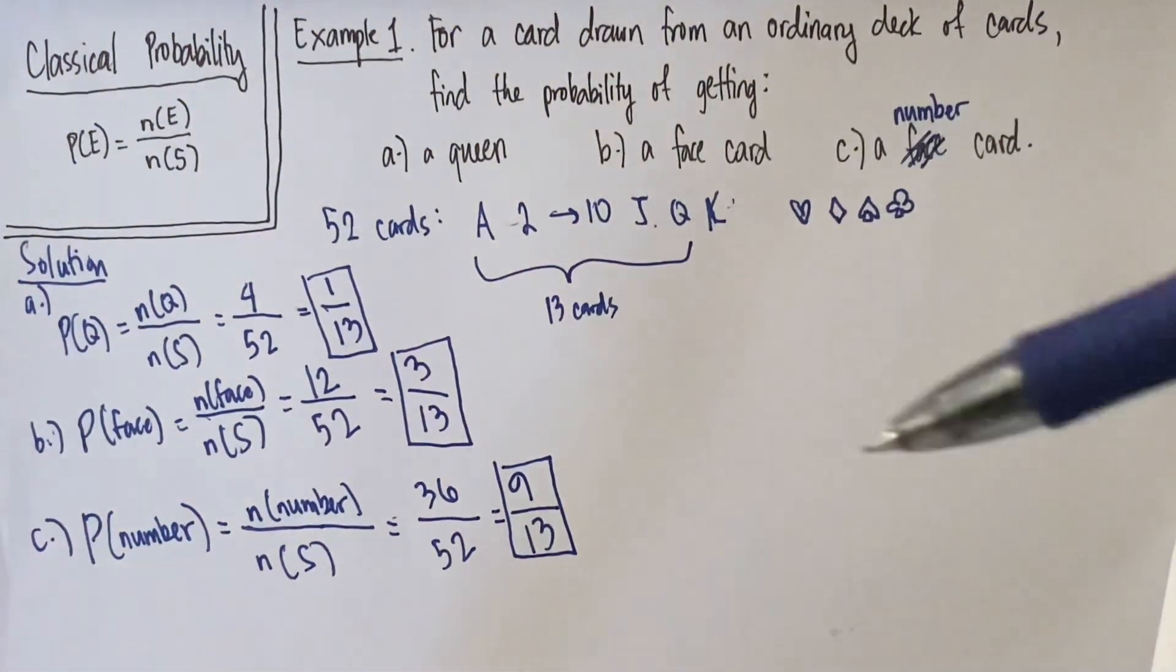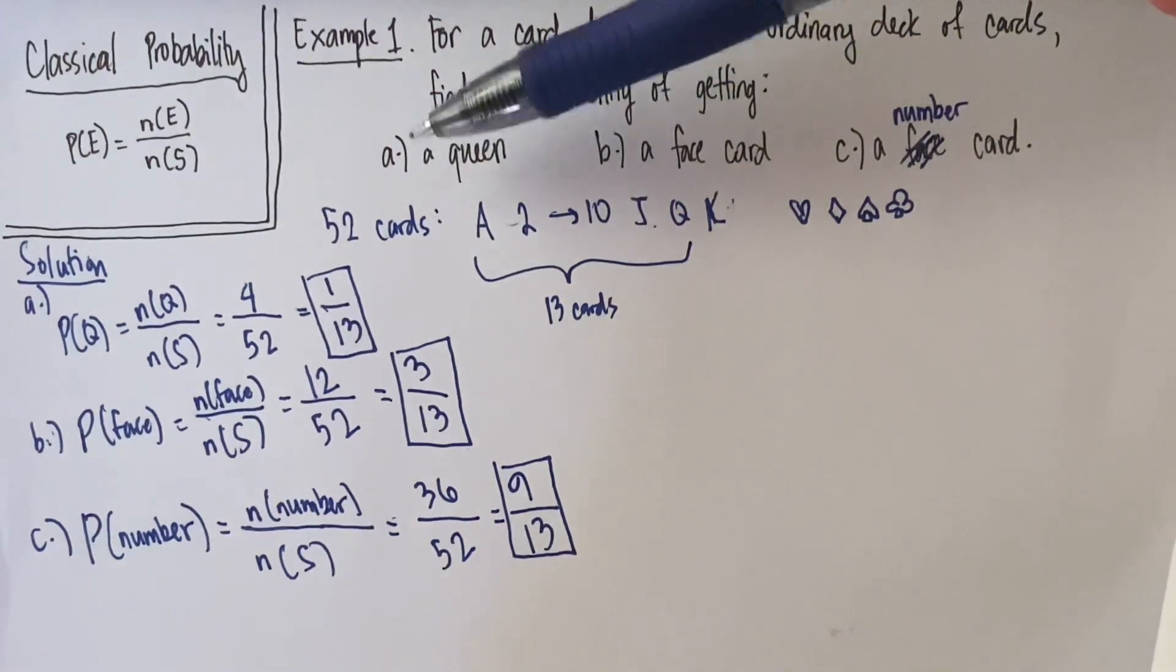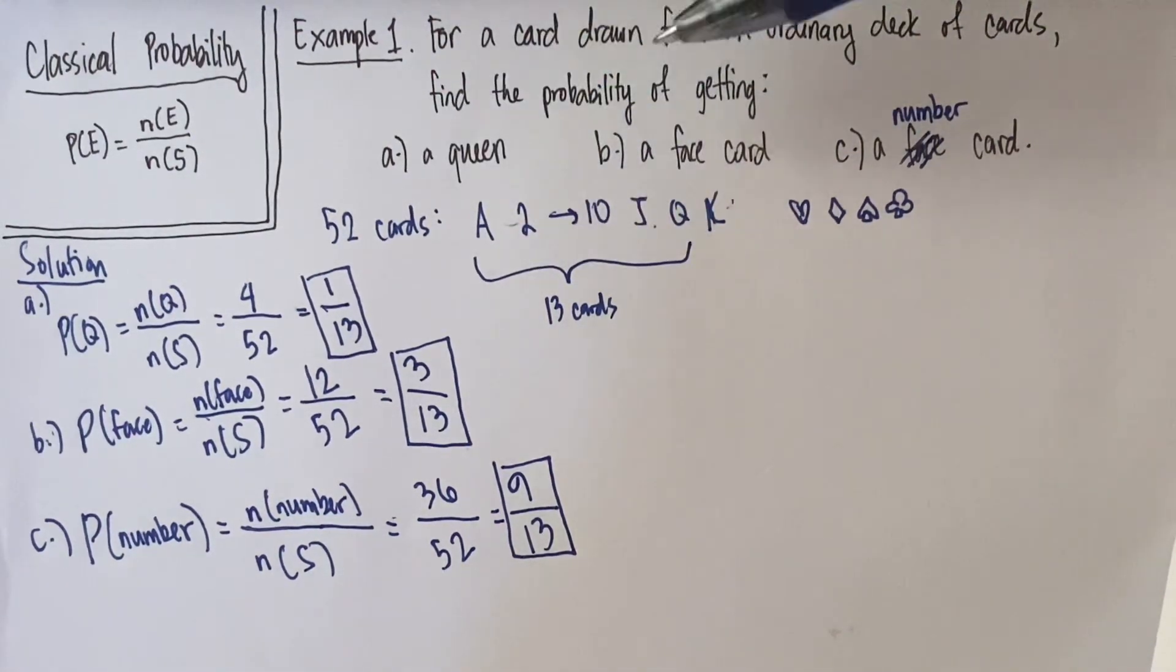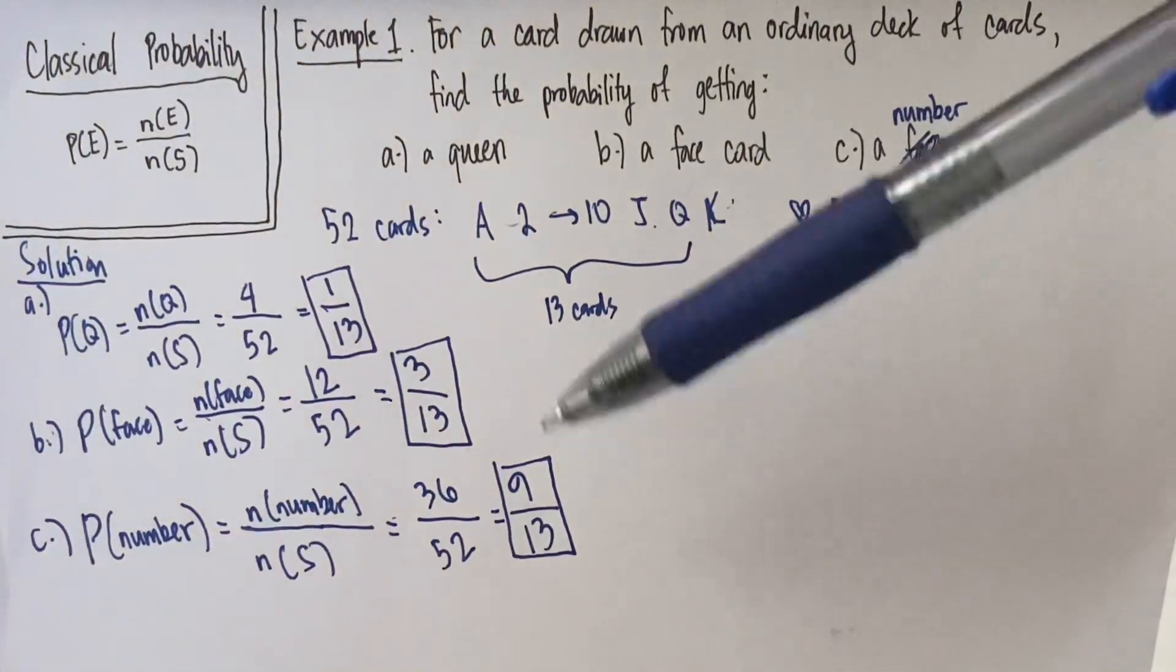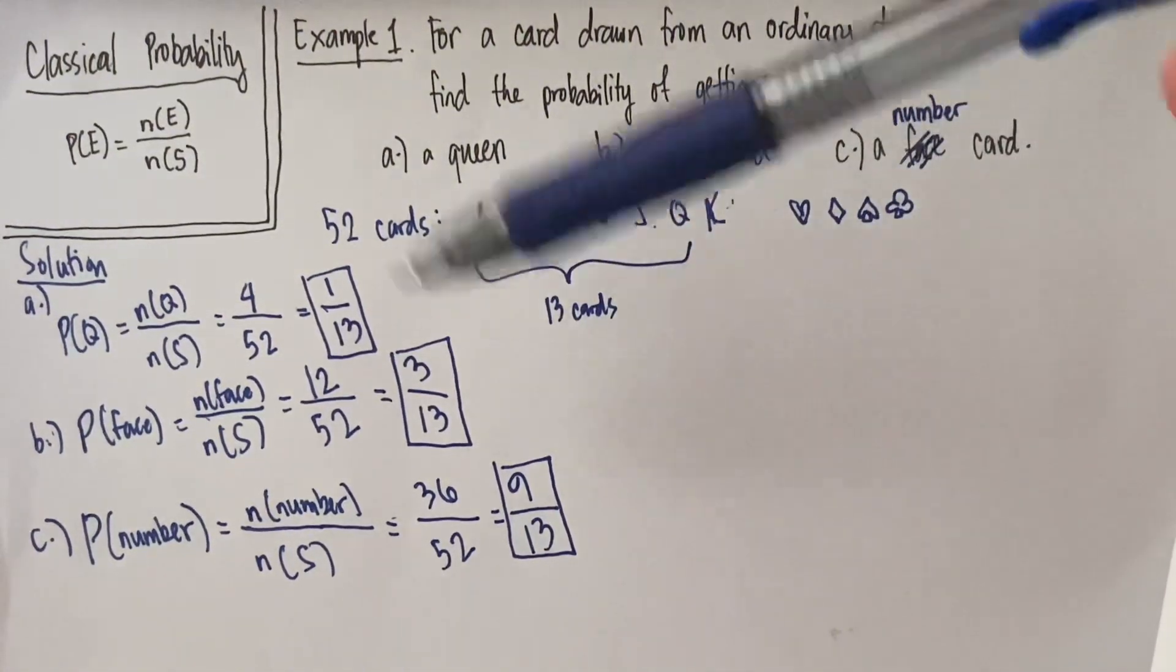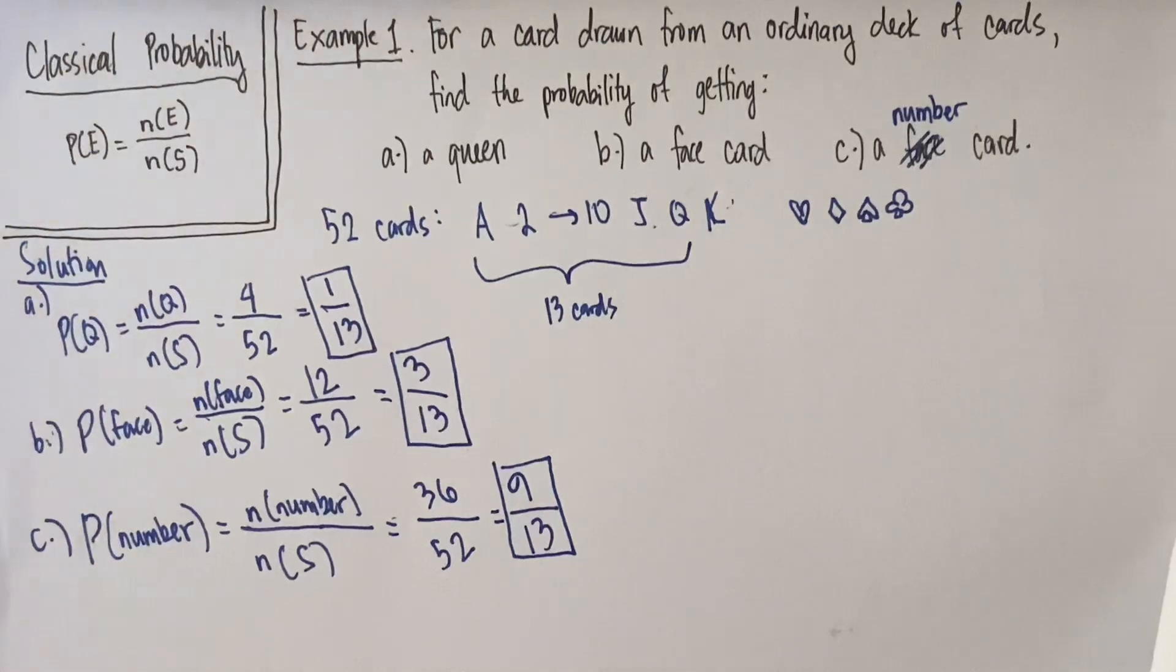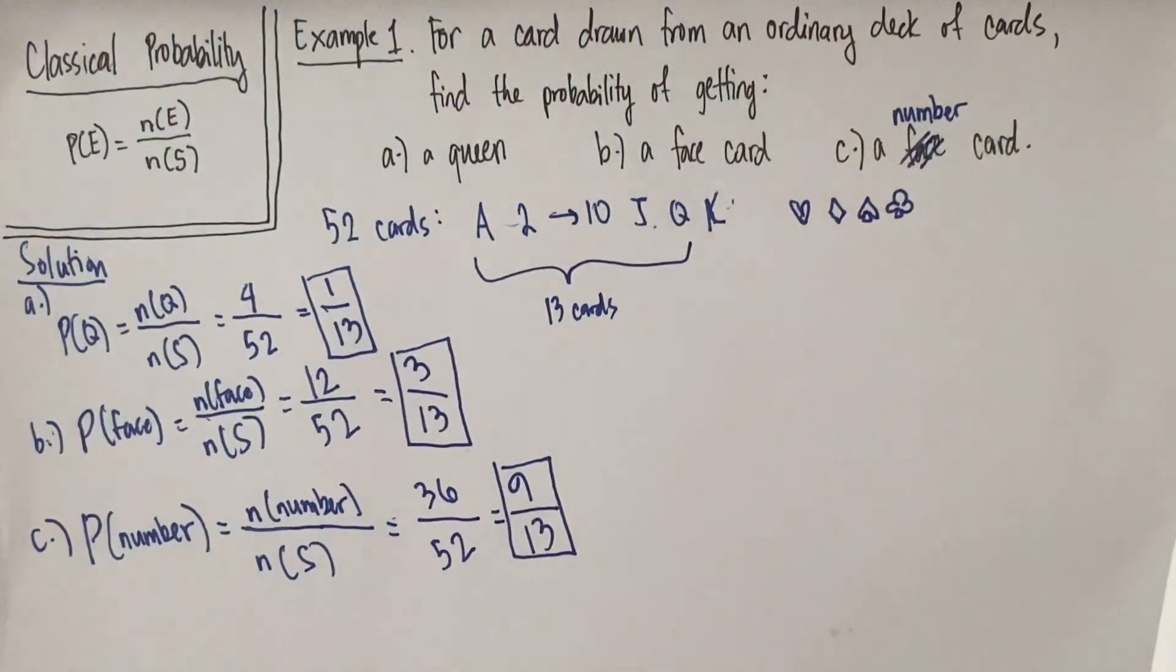In all cases, we cannot simplify them all because the denominator is 13, which is prime. And that will be our solution. The probability of getting a queen if one card is drawn is 1 over 13. The probability of getting a face card if a single card is drawn is 3 over 13. And the probability of getting a number card is 9 over 13. And you can actually get or determine the values in decimal that will lead you to get the value in percentages if that's important to you, but these answers will be enough. Okay, so thank you very much. I hope you learned something here and see you in the next video. Bye!